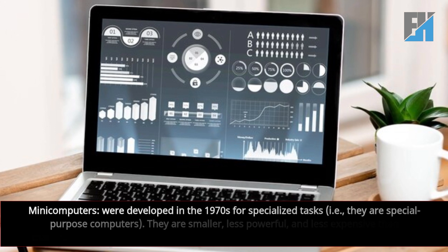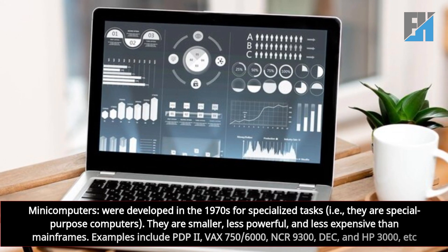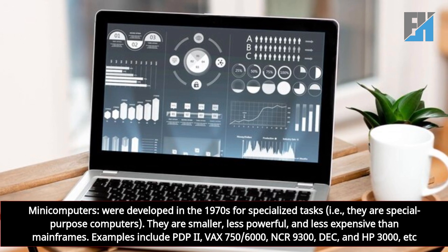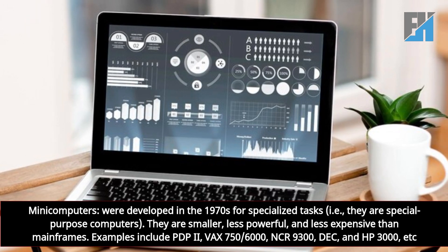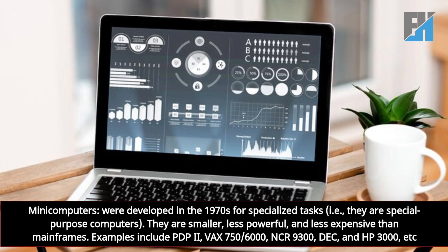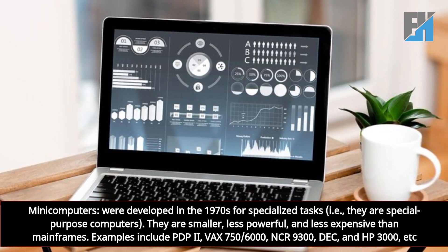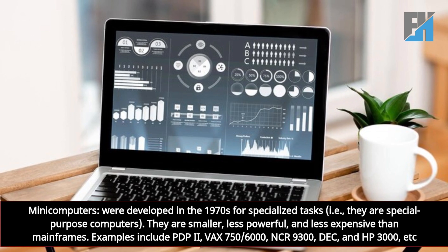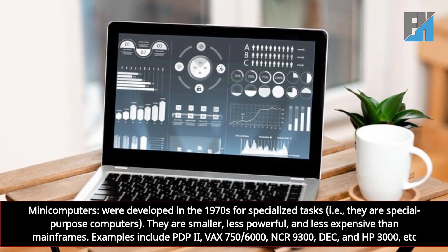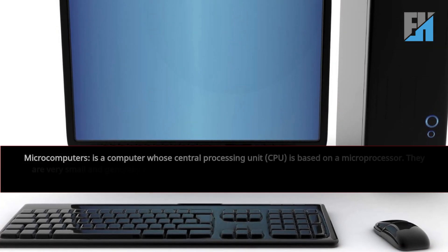Examples of mainframe computers are IBM 360, 370, and NCR V8800. Mini computers were developed in the 1970s for specialized tasks — that is, they are special purpose computers. They are smaller, less powerful, and less expensive than mainframes. Examples include PDP2, VAC 756000, NCR 9300, DECK, and HP 3000.